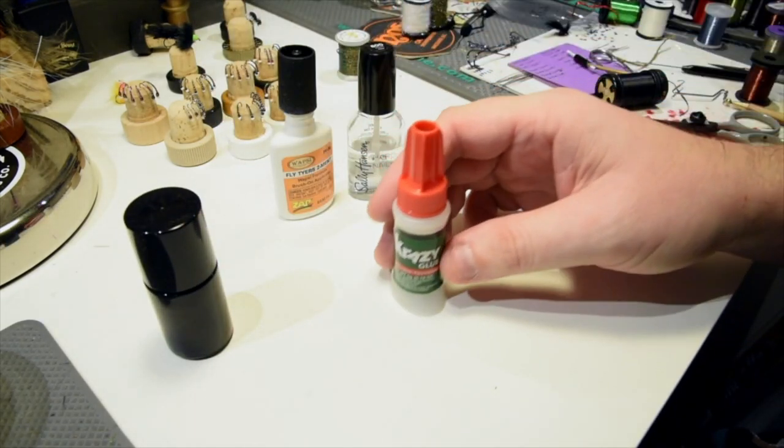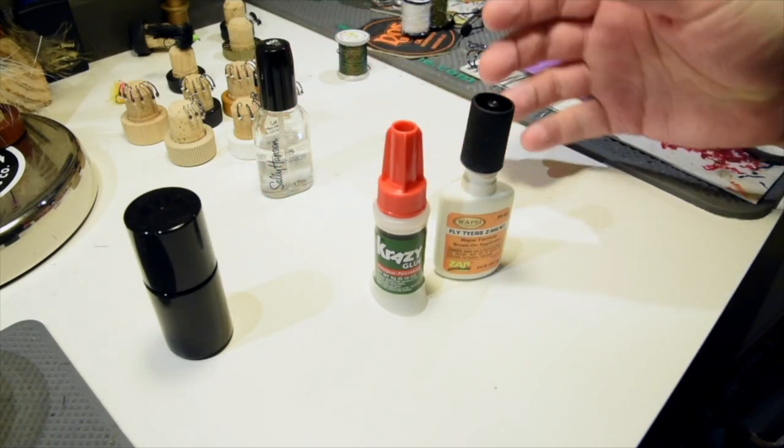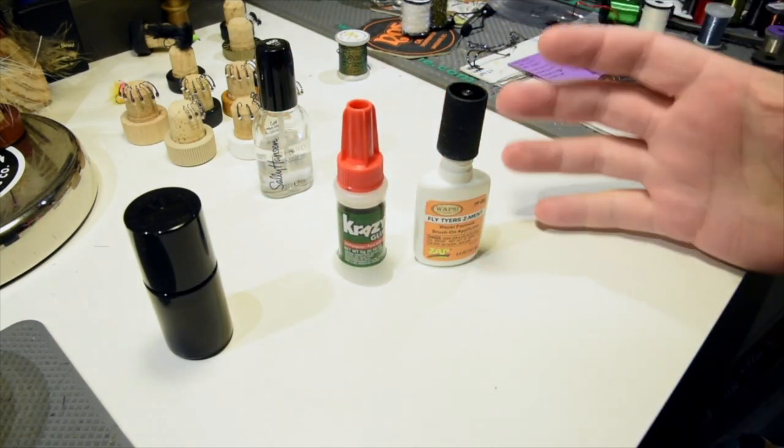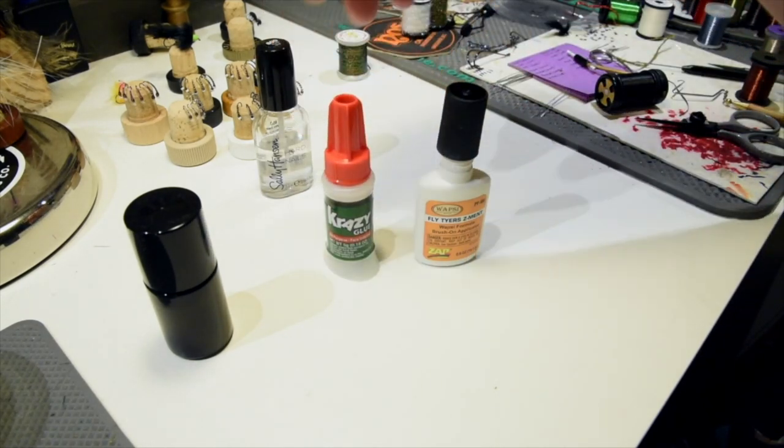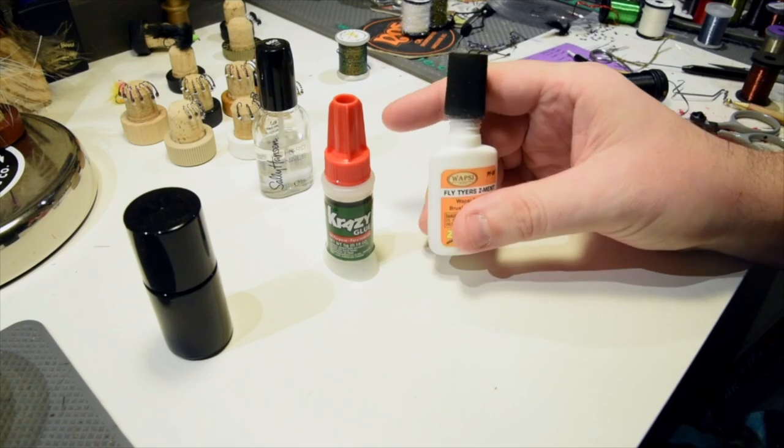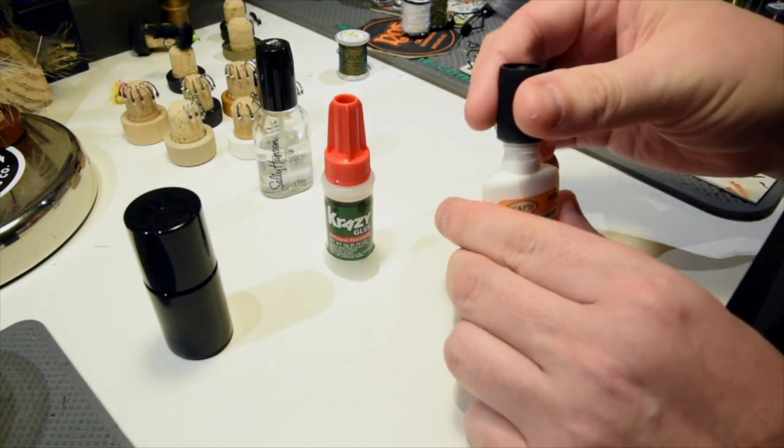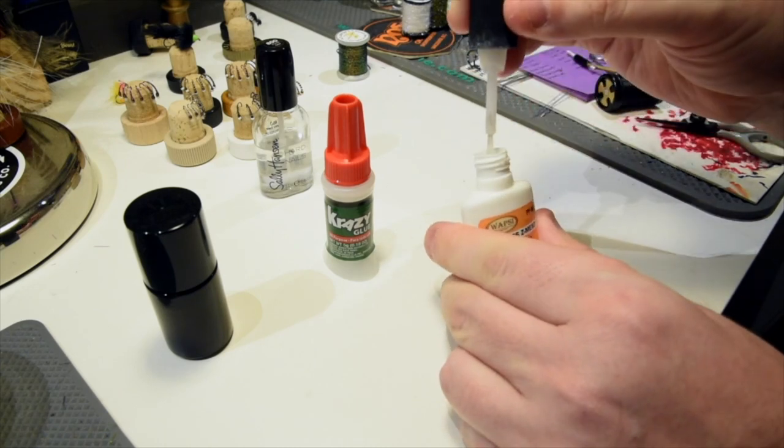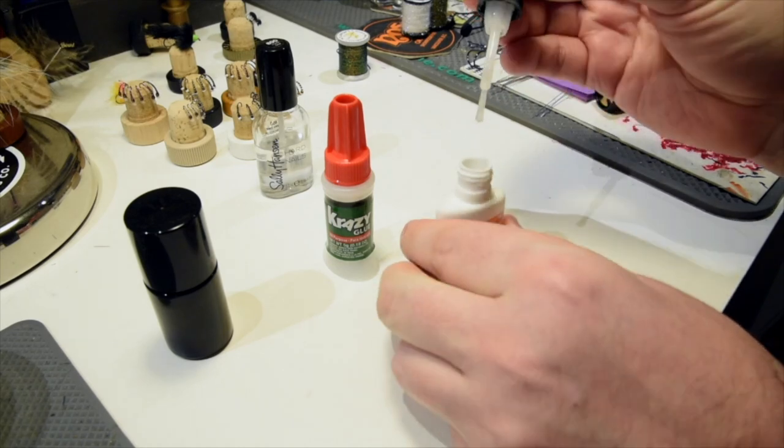Just because it crystallizes doesn't mean it's gone bad, it's still good. Just throw it in a bowl with a bunch of boiling water and it will be good to go again. Next one is Crazy Glue and Wapsi Zap-a-Gap. So these are the super glues. These are probably my favorite first coat that I like to use. We just got the Crazy Glue and just started playing around with it. I'm convinced these are exactly the same product just in a different bottle.